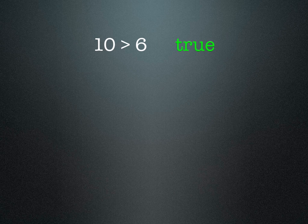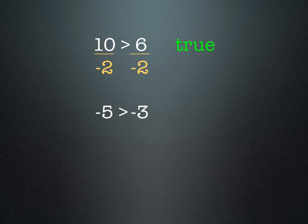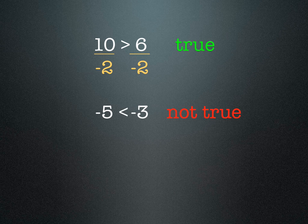Consider that 10 is greater than 6 — that's obviously true. But if we divide both sides of that inequation by negative 2, we get negative 5 is greater than negative 3, which is clearly not true. Negative 5 is a smaller number than negative 3. So anytime we divide or multiply an inequation by a negative number, we need to reverse the sign.